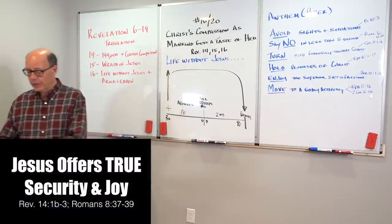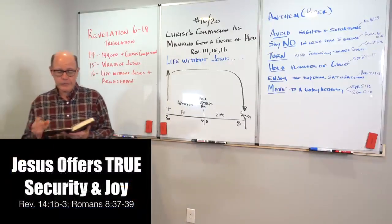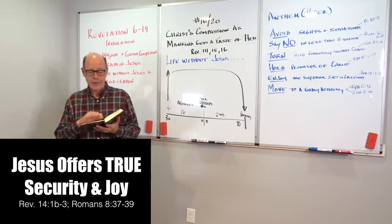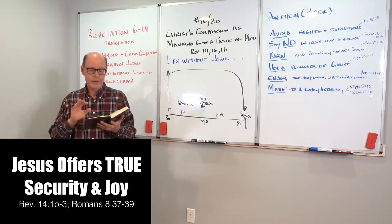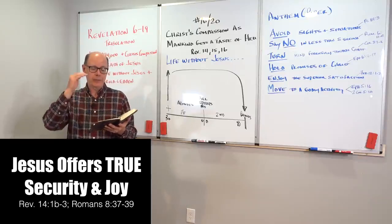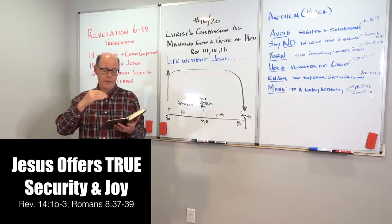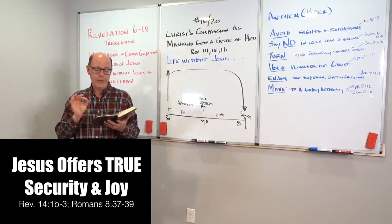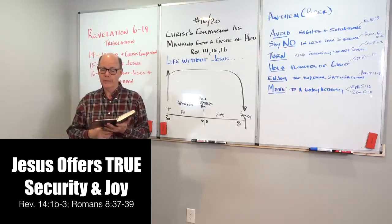So what does Jesus offer? Look at this 14th chapter and the end of verse 1. It says, having - this is Revelation 14:1, the end of the verse - having his father's name written on their foreheads.